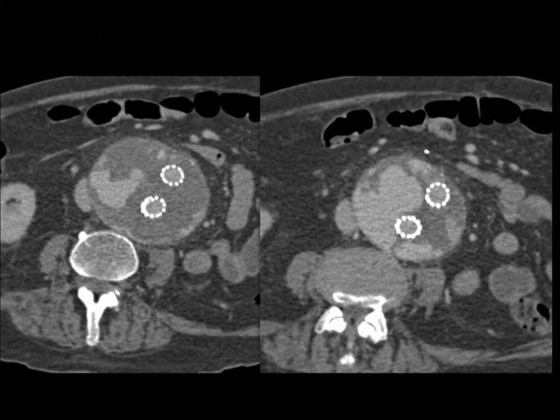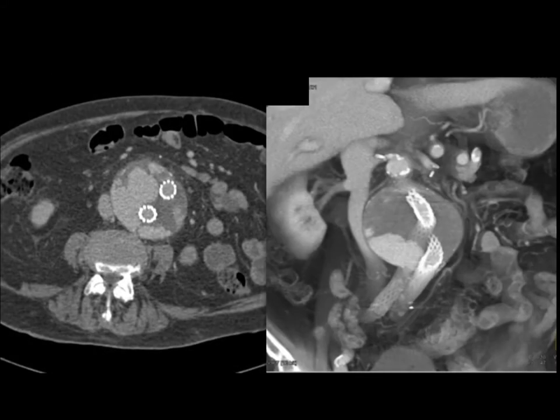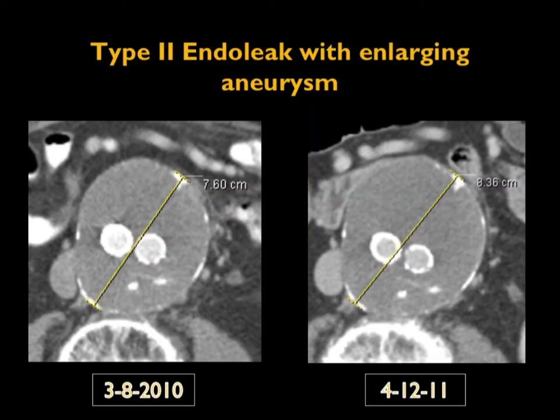Sometimes endoleaks are best seen on the arterial phase and sometimes on venous phase; most of the time they're seen on both. Sometimes they're only seen on venous phase because they're slow. You can see here this large aneurysm post endovascular stenting with a large endoleak. In this case the endoleak is present and the key point is the aneurysm is increasing in size from 7.6 to 8.4 centimeters in a year, so repair was done but intervention is needed.